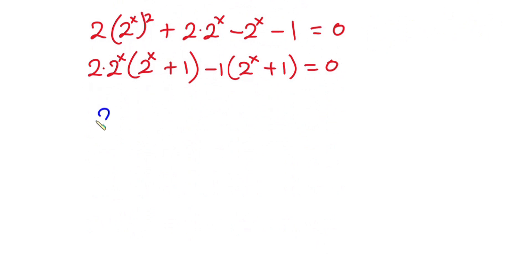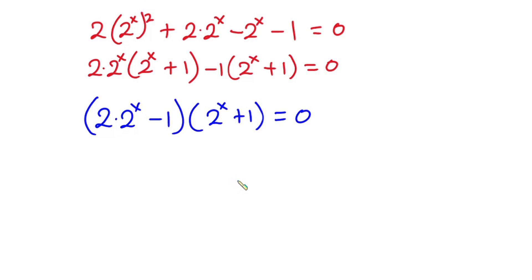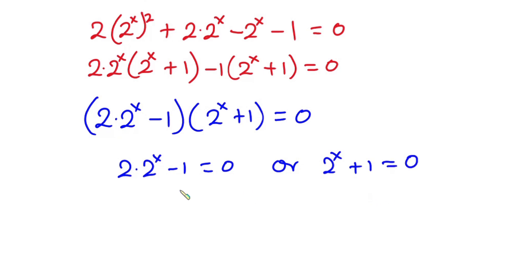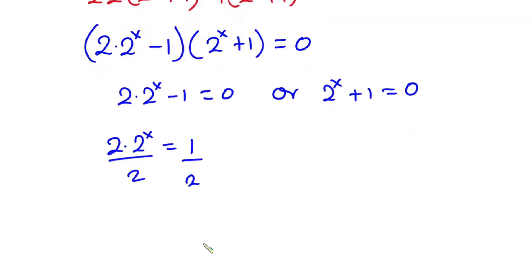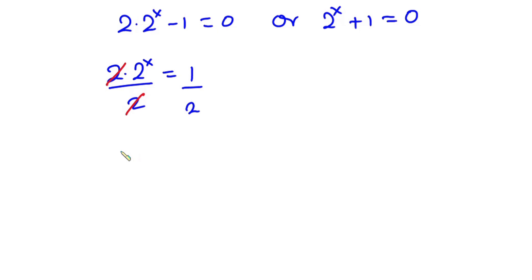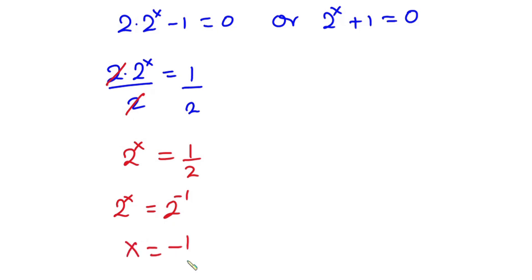So at this point the factors are (2 times 2 to the power x minus 1) and (2 to the power x plus 1), and their product equals 0. From the first factor, 2 times 2 to the power x equals 1. Dividing both sides by 2 gives 2 to the power x equals one half, which is 2 to the power negative 1. Since the bases are the same, we equate exponents: x equals negative 1.